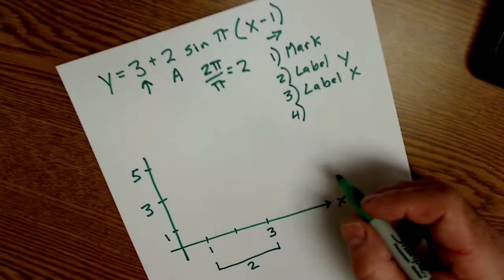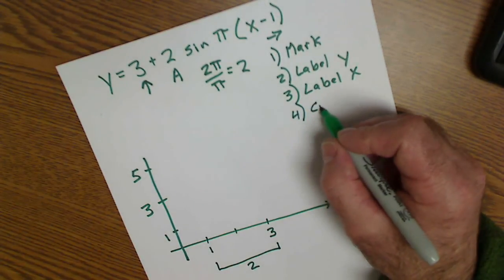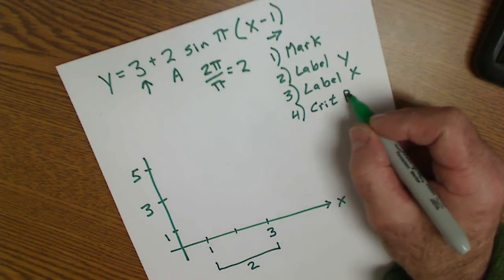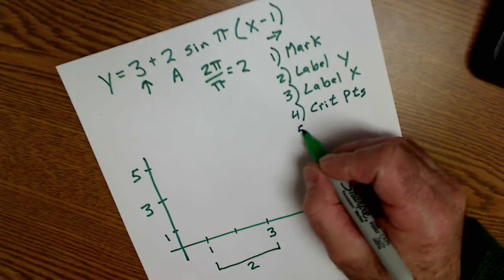Step four, put in my critical points, my quarter points, and look at the function. Step five is to check.